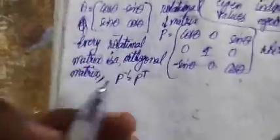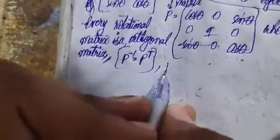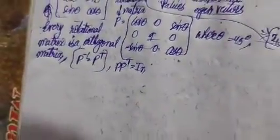For the orthogonal matrix, its P inverse must be equal to its transpose. This property can also be shown as a property of the rotational matrix, and it can be written as P multiplied by P transpose equals the identity matrix.